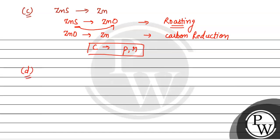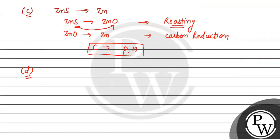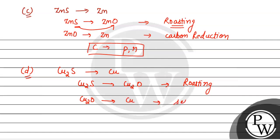Next, अगर हम बात करें D की, तो Cu₂S gets converted into Cu. इसमें भी दो processes होंगी. पहले sulphide, oxide में convert होगा — इस process को हम बोलते हैं roasting. उसके बाद जो oxide है, वो metal में convert होगा, लेकिन यह self-reduction के through होगा — copper खुद ही reduce हो जाएगा to its metal. तो हमारा D part, P and S से match हो रहा है.